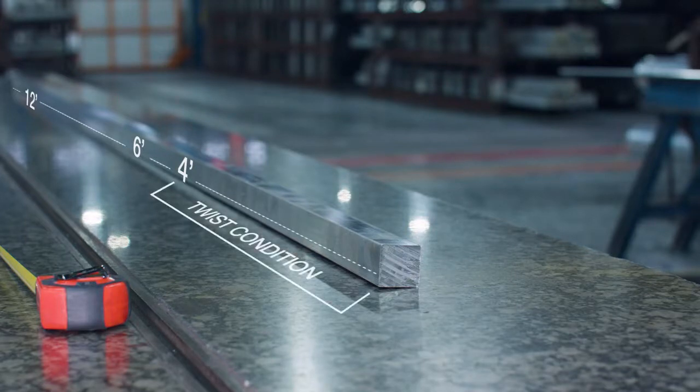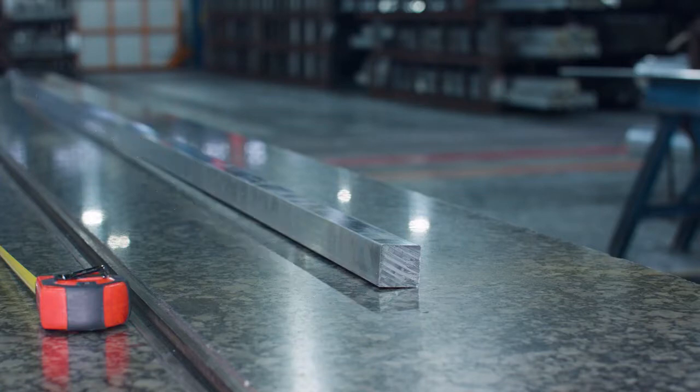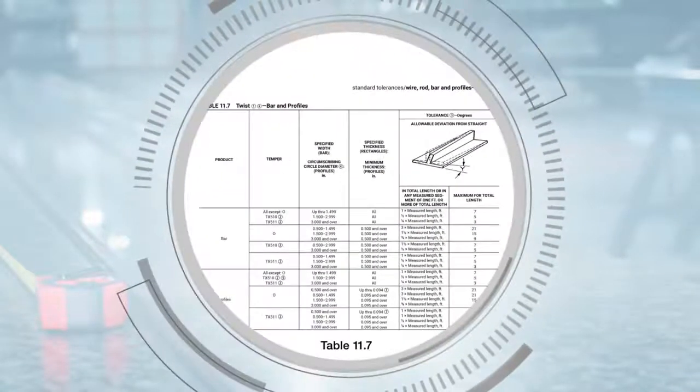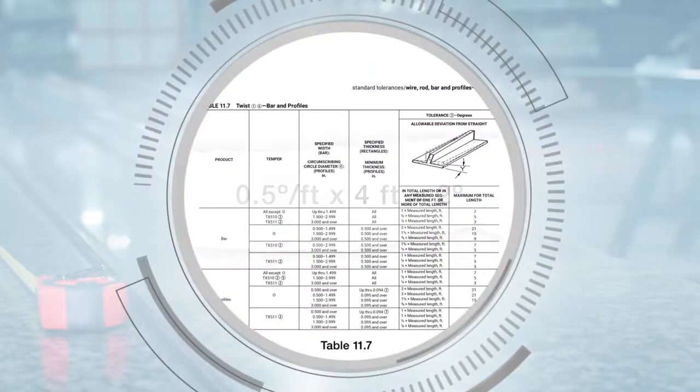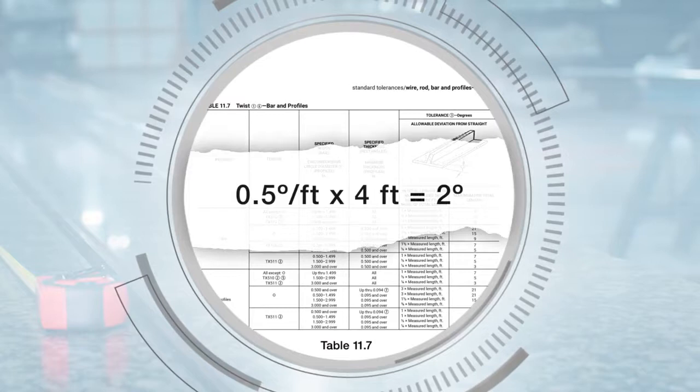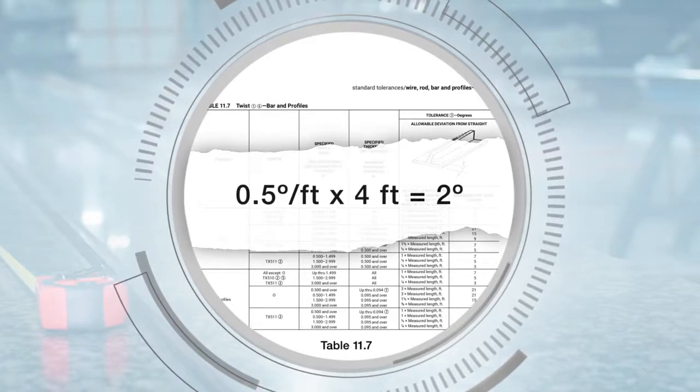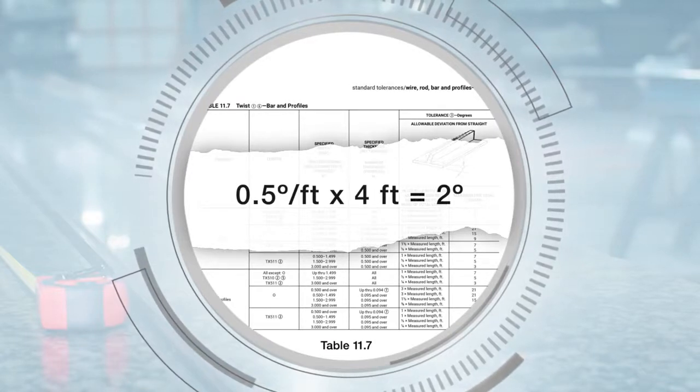On our 12 foot bar, the twist condition is most visible at a four foot span near the end. We'll take the same equation from table 11.7 we used earlier, a half degree multiplied by measured length, in this case, a half degree times four foot, which will give us a tolerance of two degrees.